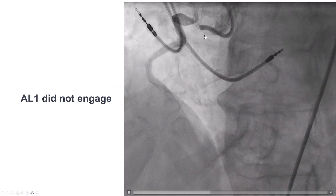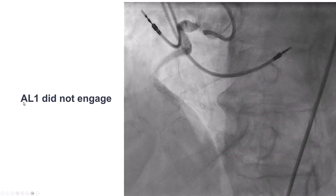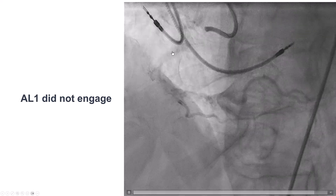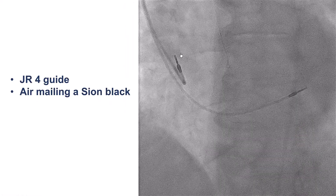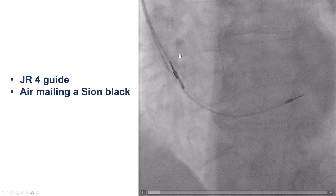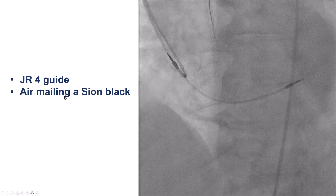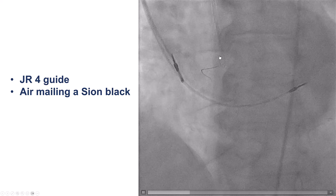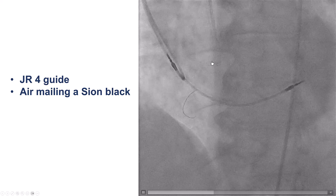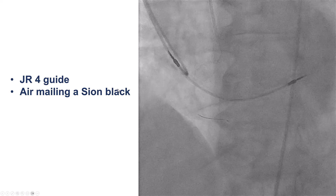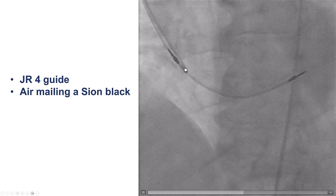Still, engagement of the coronary artery was extremely difficult. We tried with an AL1 and JR4 but could not engage. Eventually, we used a technique called the airmail technique. We got a JR4 catheter and tried to align it as much as we could with the ostium, and then we took a polymer-jacketed wire, a Sion Black, and tried to advance it blindly.